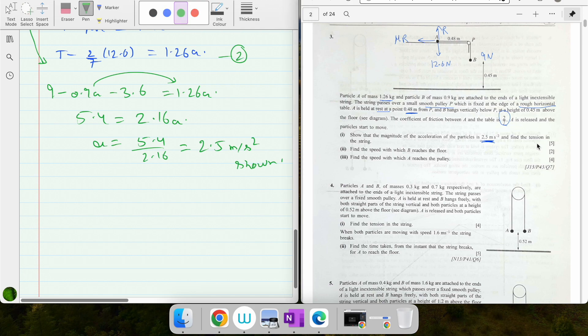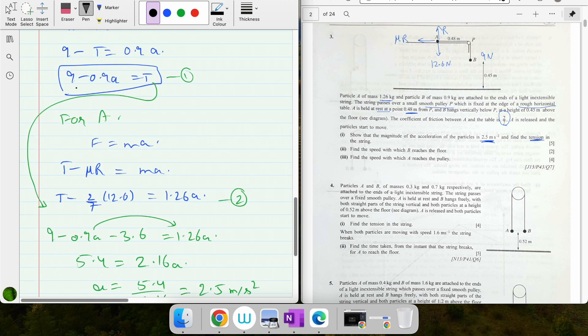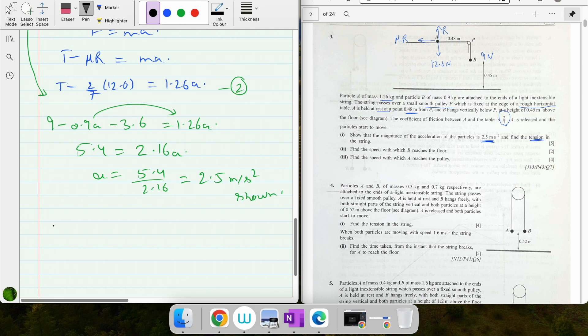And tension - when we have the acceleration we can put that back in the equation. Tension equals 9 minus 0.9a. So 9 minus 0.9 times 2.5, we get 6.75 newtons.